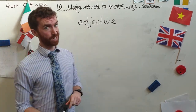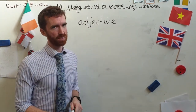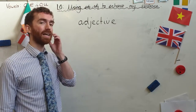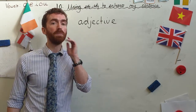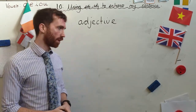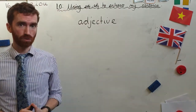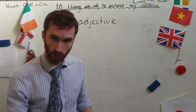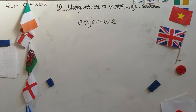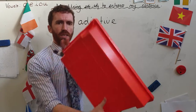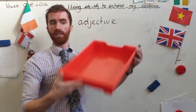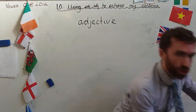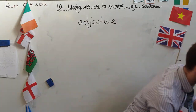An adjective is a describing word. It is something that describes a noun. Remember, we said before that nouns are things. A book is a noun. A tray is a noun. A chair is a noun.